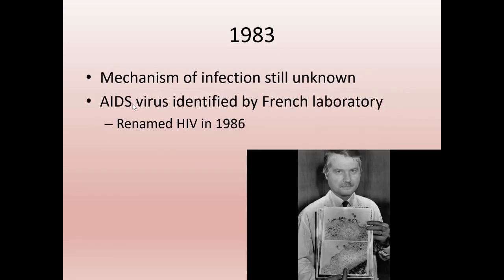In 1983, we still don't know how it's transmitted. The virus gets identified by a French laboratory and renamed HIV in 1986. This American doctor, Dr. Gallo, received photographs of the virus. Here are images of the virus attaching to white blood cells called helper T cells, whose fancy name is CD4.